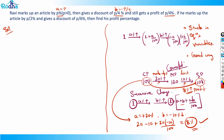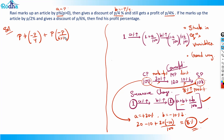Applying the formula a + b + ab/100: we get P + (−P/4) + (P × −P/4)/100 = P/4. This simplifies to P − P/4 − P²/400 = P/4. So we have P − P/4 − P/4 = P²/400, giving P/2 = P²/400.